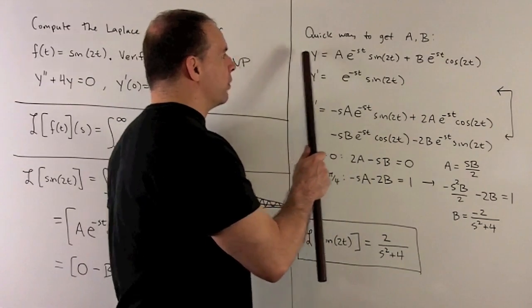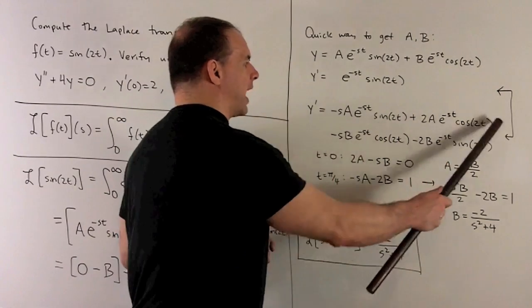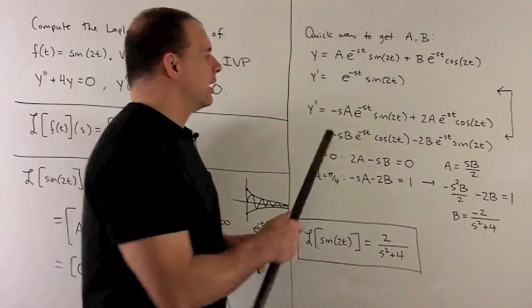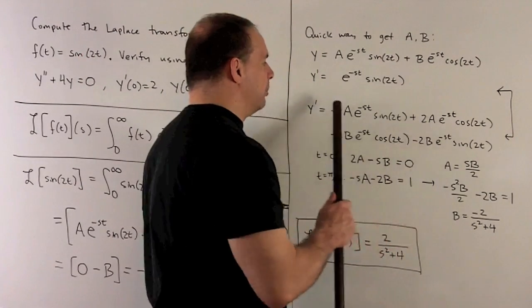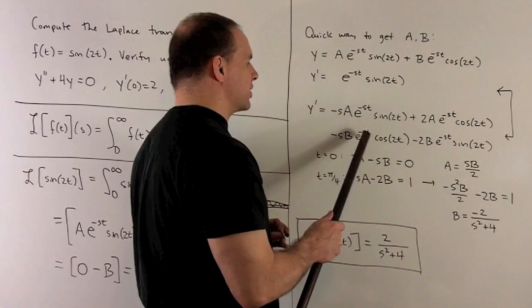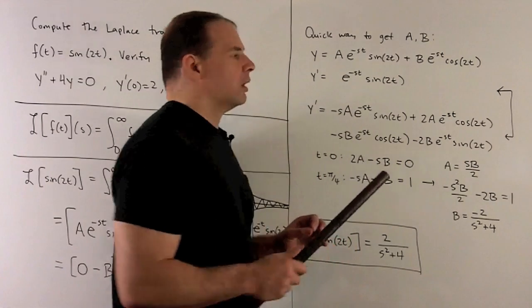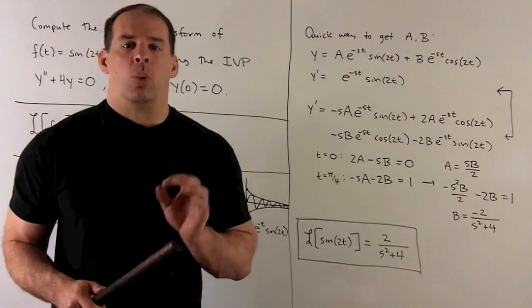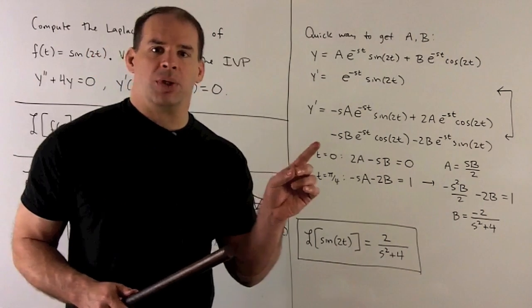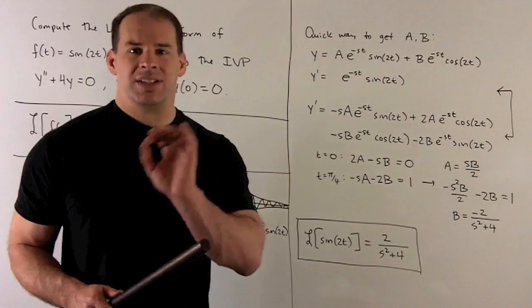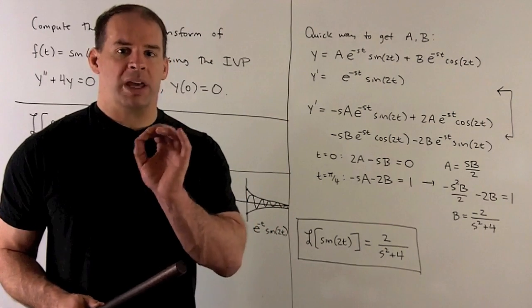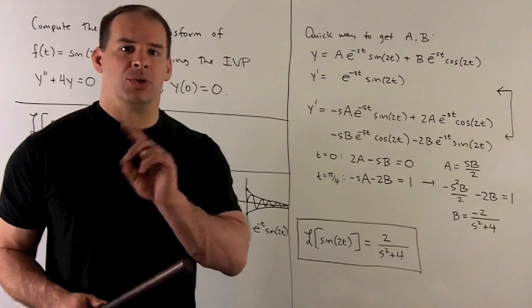I can still take the derivative of the original function, so I work that out. It's going to be a few product and chain rules. Then, I want to extract a and b from the equations that I get when I set this equal to this. A couple ways to do that. One is to lump all the cosine terms together on one side, set them equal to the cosine terms on the other. Same thing with the sines. Or, you can just pick specific values of t that do the same thing.